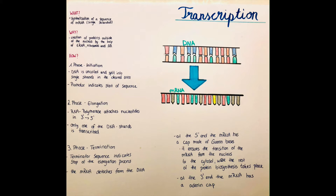But let's start at the beginning. The first phase, the initiation phase. Here the double-stranded DNA in the nucleus is uncoiled and split into its single strands by breaking up the hydrogen bonds in the area that is needed to generate mRNA for the respective protein. And a promoter — not a primer this time like in the replication, but a promoter — also a short nucleotide sequence, shows where the sequence that is needed starts.